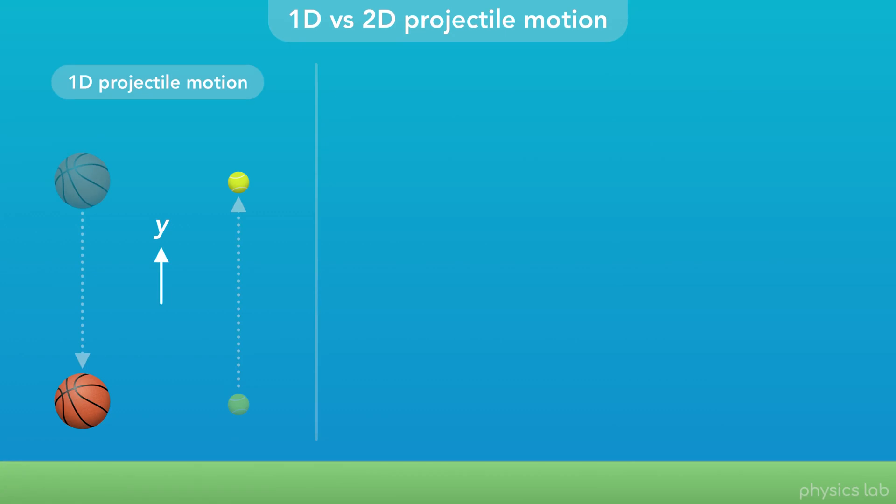In 1D projectile motion, we only dealt with motion in the y direction. In 2D projectile motion, we have motion in the x and y directions.